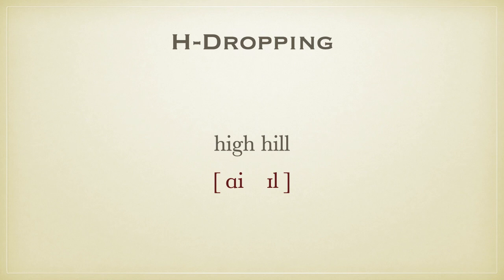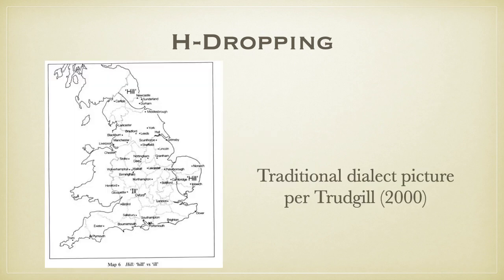Another pronunciation familiar to most Americans, though we don't have it to the same degree, is H-dropping — simply not pronouncing the H. So a phrase like 'high hill' might be pronounced 'I ill.' Historically, H-dropping was very widespread. A map from Peter Trudgill shows that almost all of England, with the exception of the northeast and East Anglia, was traditionally H-dropping territory. However, this is somewhat misleading because the feature operates more along social class lines than regional ones.